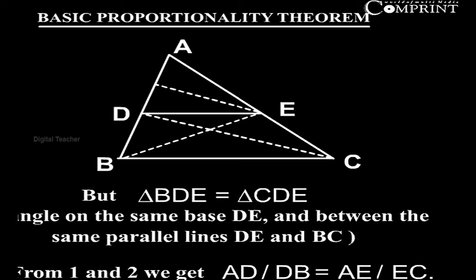But triangle BDE equal to triangle CDE. Triangles on the same base DE and between the same parallel lines DE and BC. From equation 1 and equation 2, we get AD by DB equal to AE by EC.